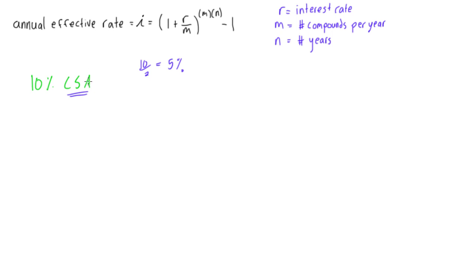You can imagine if we're compounding quarterly, we're going to have 10 over 4. We're going to have four payments, so the rate that we're paying out is 2.5%, but we're going to compound this four times per year.